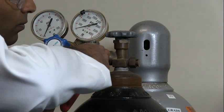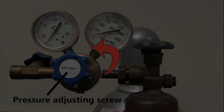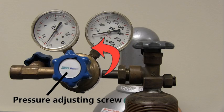Tighten the connection with a smooth-jawed wrench. Turn the regulator's pressure-adjusting screw counterclockwise until it turns freely.